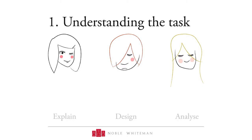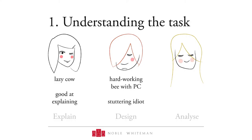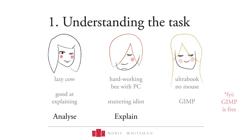Cathy is a lazy cow, but she somehow manages to be good at explaining stuff. Nora, on the other hand, is a hard-working student, and the only thing she's good at is reciting books — because like most proper students, you only have to memorize things. But if she has to explain something, she turns into a stuttering idiot. Anyway, Tanisha struggles between the analysis and the computer-aided design. But unlike Nora, who is also a complete tech freak with an extremely powerful PC, Tanisha only has an Ultrabook without a mouse, but she has GIMP. And all things considered, all three ladies make the right choice: the lazy cow does the analysis, the stuttering idiot is going to explain it, and Tanisha is doing the computer-aided design layout. Amazing, isn't it?